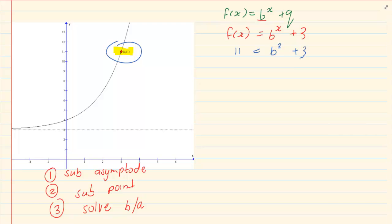Now you need to solve using your exponential rules. So if I take my 3 over, I have 8 is equal to B to the power of 3. 8 becomes 2 to the power of 3, which is equal to B to the power of 3. They have the same base, so I have B is equal to 2.